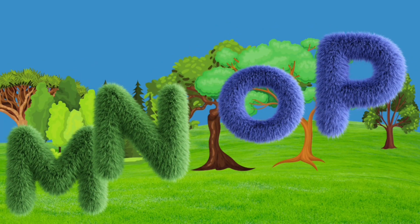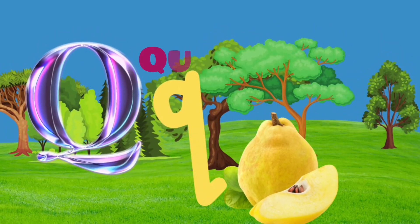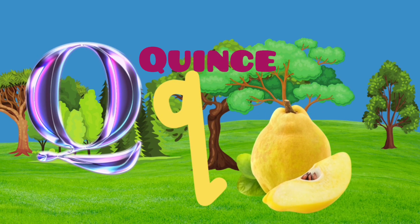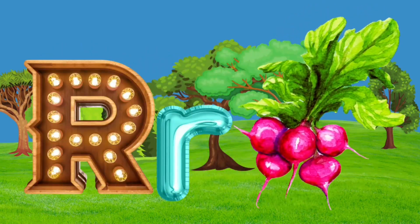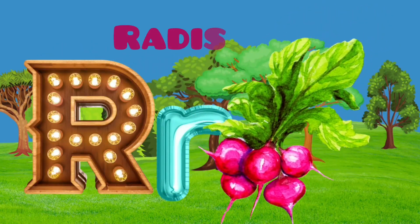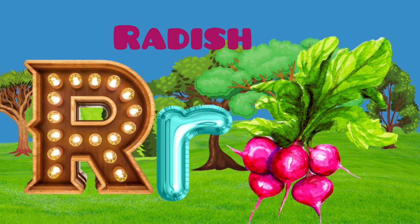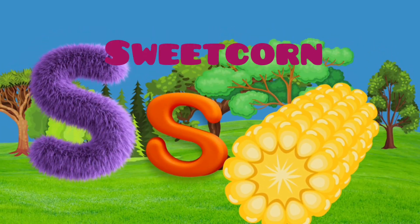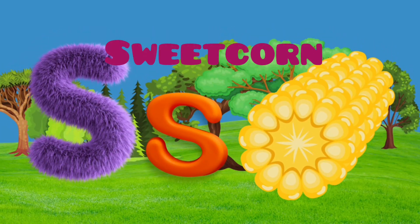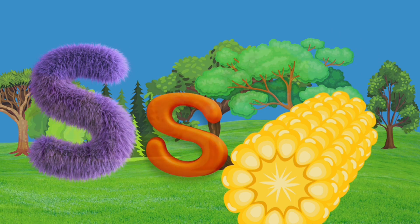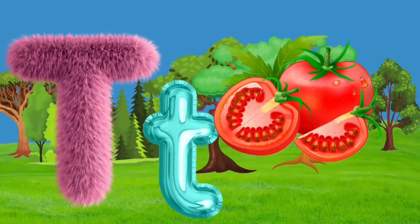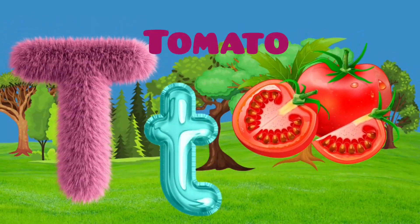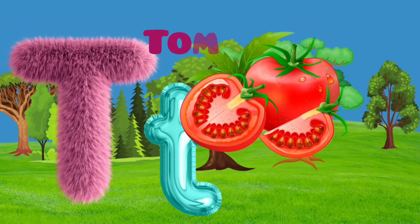Q is for quince, quince. R is for radish, radish. S is for sweet corn, sweet corn. T is for tomato, tomato.